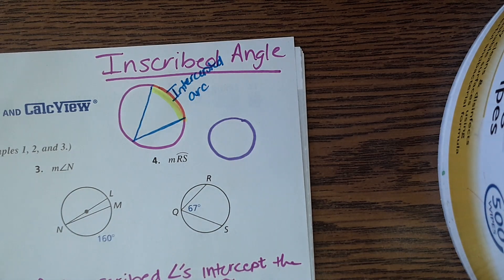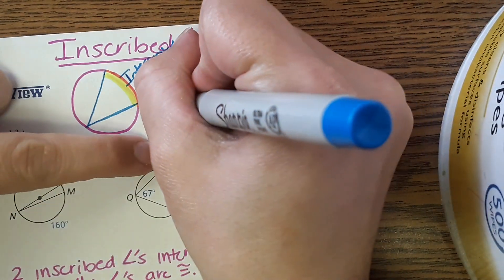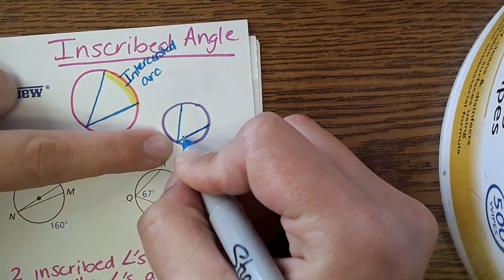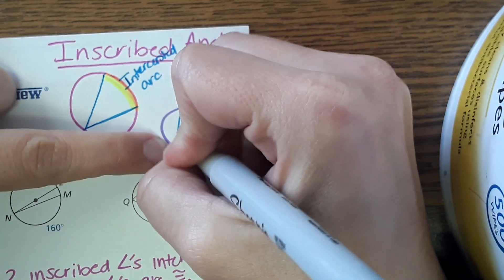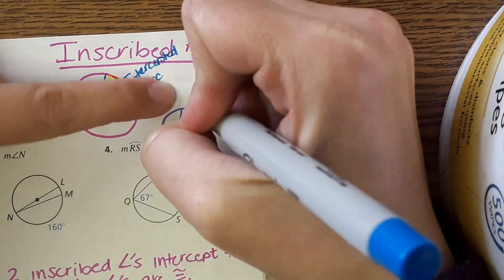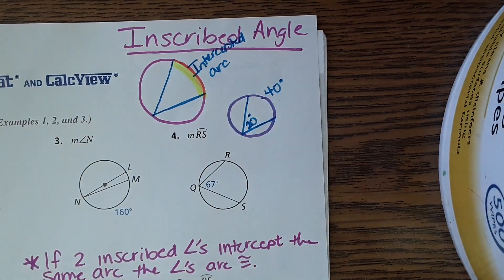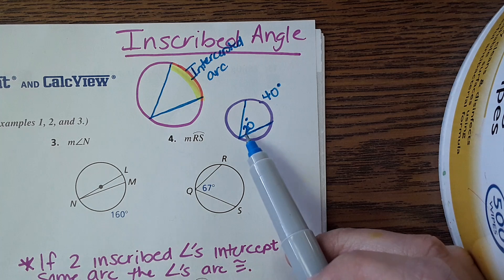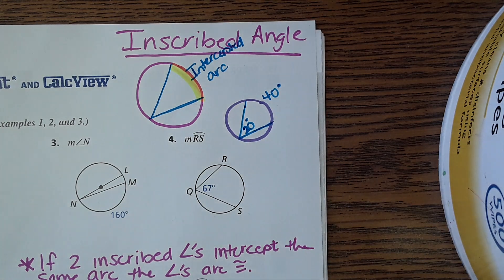As far as the math goes with inscribed angles, it's pretty simple. When you have an inscribed angle that goes all the way across, if that angle measure is 20 degrees, then the arc measure is double that — so the arc would be 40 degrees. And vice versa: if you're given the arc and asked for the angle, you divide by 2.